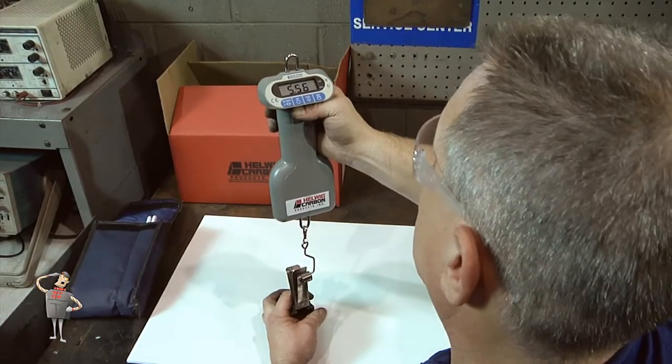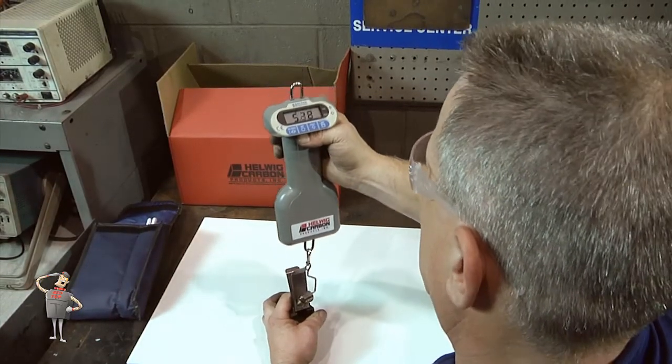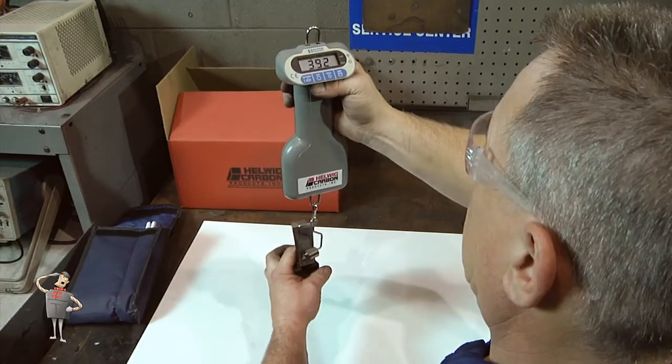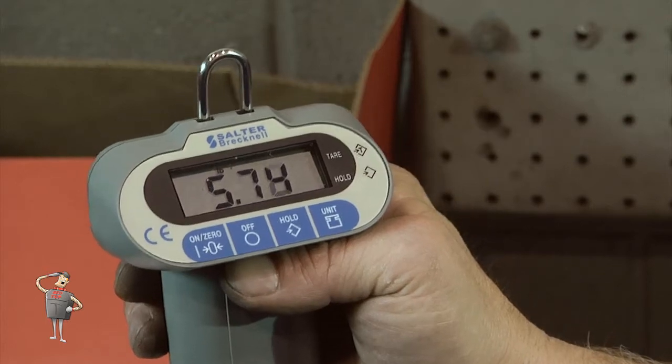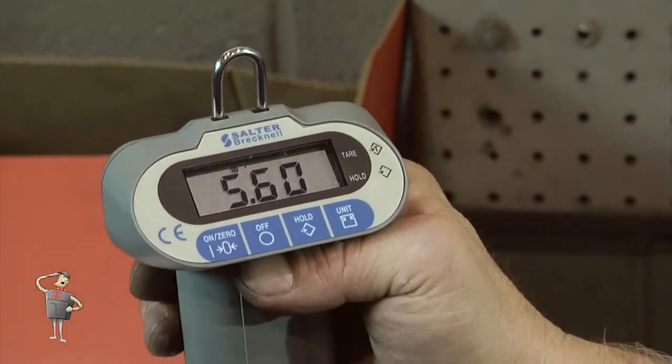Next, measure the spring force to ensure that it is in the recommended range per the measuring spring force procedure. Most industrial applications should be in the recommended level of 4 to 6 psi.